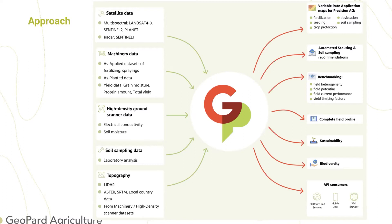Results from the Geopard platform depend on your business needs. We create variable rate prescription maps, automated alerts for scouters, tasks created automatically, benchmarking reports regarding your field heterogeneity, variability, and performance. We can help you define yield-limiting factors all in one software — you don't need any third-party software. The user interface is very simple, and our software is also used via API by some companies.